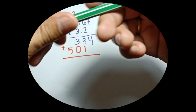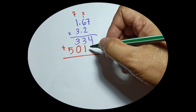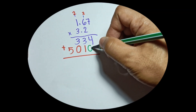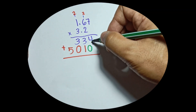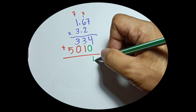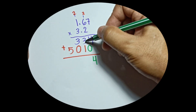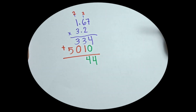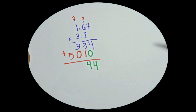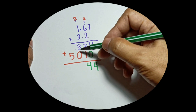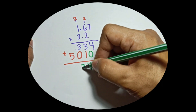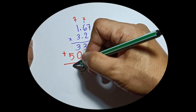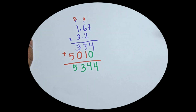If you don't want to get confused, you can add a 0 here. 4 plus 0 is 4, then 3 plus 1 is 4, then 3 plus 0 is 3, then bring down 5.